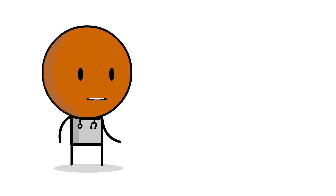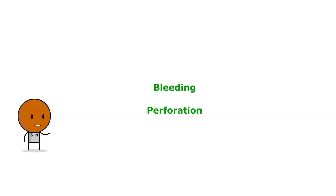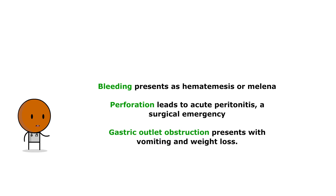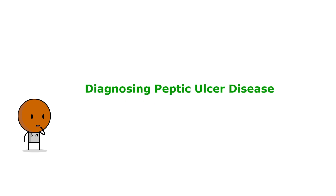Serious complications of peptic ulcer disease include bleeding, perforation, and gastric outlet obstruction. Bleeding presents as hematemesis or melena, while perforation leads to acute peritonitis, a surgical emergency. Gastric outlet obstruction presents with vomiting and weight loss.